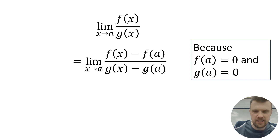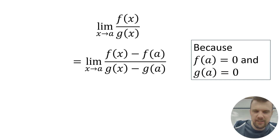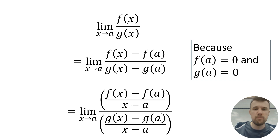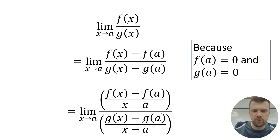Once we've done that, taking away zero doesn't affect things. We can then do another trick: we're going to divide the top and the bottom of the fraction by (x − a). Because we're doing the same thing to the top and the bottom, that's allowed. This leaves us with the expression you can see on screen, and because we've divided top and bottom equally, the fraction has maintained its value.